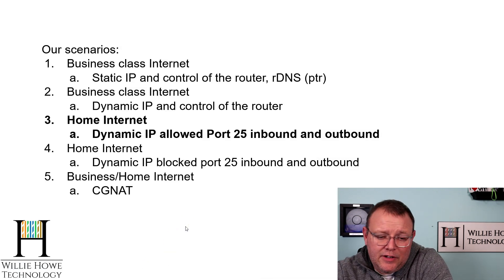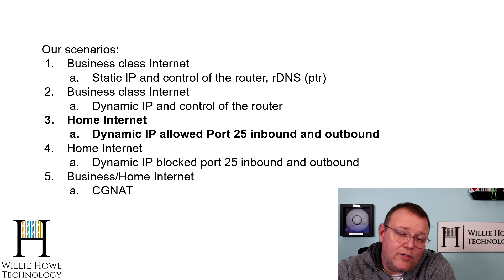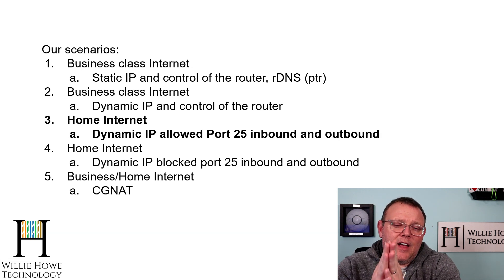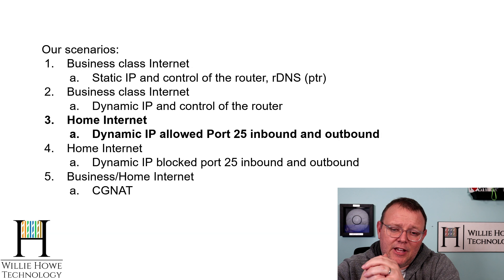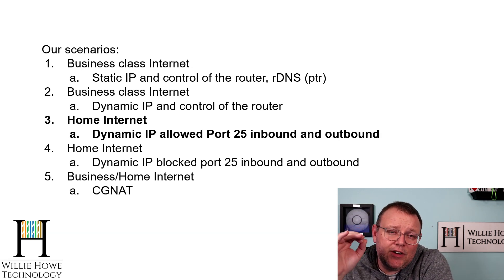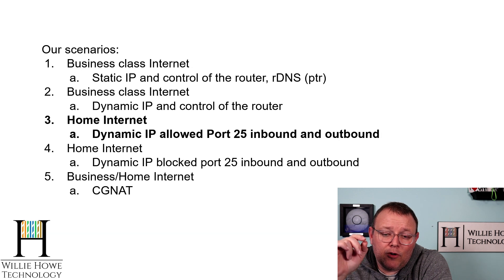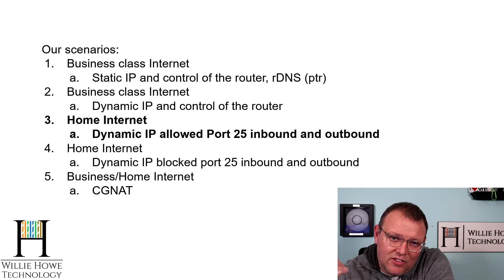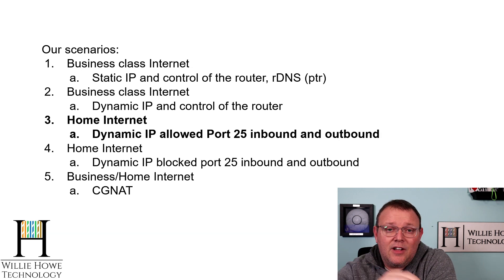Let's talk about the scenarios we're going to be dealing with. Scenario number one is business class internet with a static IP and control of our router and DNS or reverse DNS — that pointer record that maps the IP to the FQDN. Scenario two is business class internet with a dynamic IP and control of the router. Scenario three is home internet with a dynamic IP, allowed port 25 inbound and outbound, and control of the router — and that's the one we're going to start with because it covers the hardest part of hosting email.